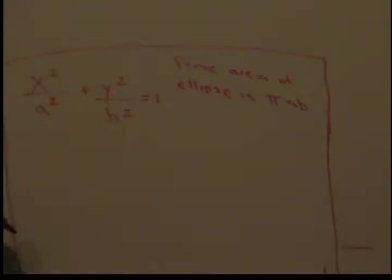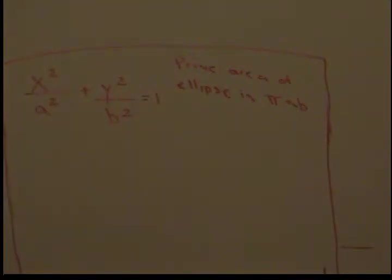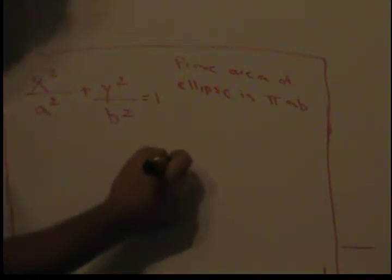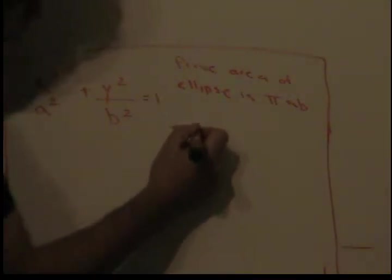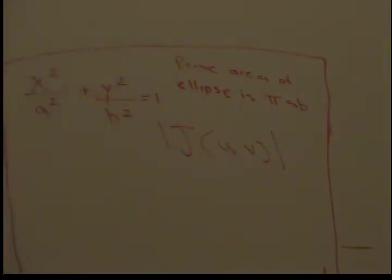Okay, today we're trying to prove that the area of an ellipse is π*a*b. This is the ellipse right here. There are two ways of doing this: we can either use the Jacobian to prove it's π*a*b, or we can use a much easier and faster method.